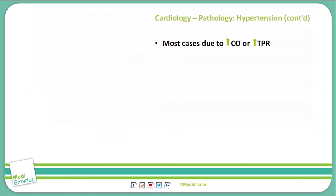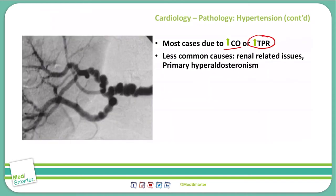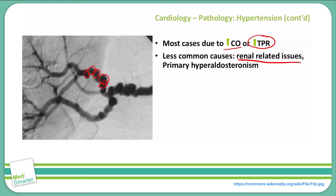Most cases of hypertension are due to an increase in cardiac output or in total peripheral resistance. There are also some less common causes. Some may be related to renal issues — specifically, as seen in this picture, what's called the string of beads appearance, which is the renal artery with fibromuscular dysplasia. This is often seen in women of childbearing age. Furthermore, primary hyperaldosteronism can also predispose someone to hypertension.